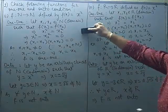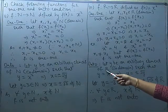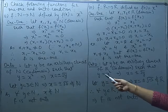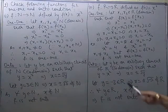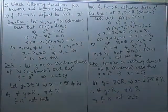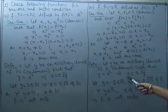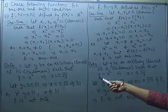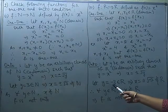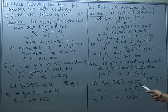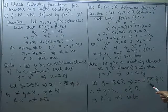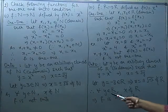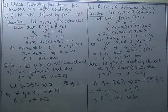Now checking whether it is onto: y is an arbitrary element of the codomain denoting the image of x, so y = x², giving x = ±√y. Check whether for all real y, x is also a real number. If we replace y by −3, which is a real number, then x = ±√(−3), which is not a real number. So for some real numbers in the codomain, there is no real number in the domain. There are many real numbers in the codomain that are not images, so f is not onto.